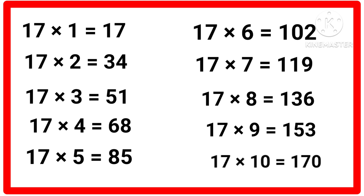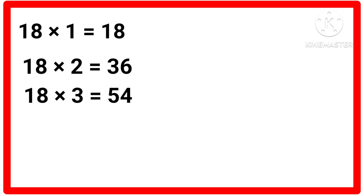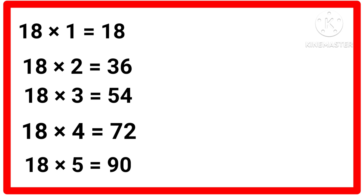17 tens are 170. Table of 18. 18 ones are 18, 18 twos are 36, 18 threes are 54, 18 fours are 72, 18 fives are 90, 18 sixes are 108.